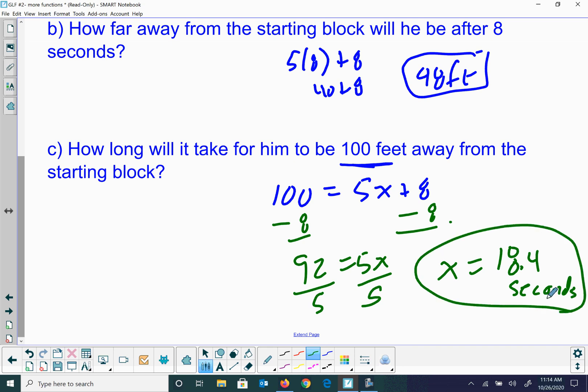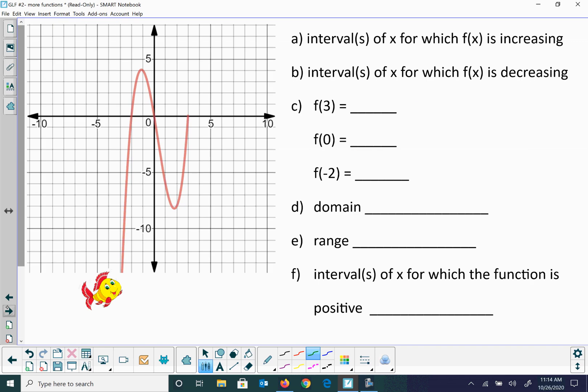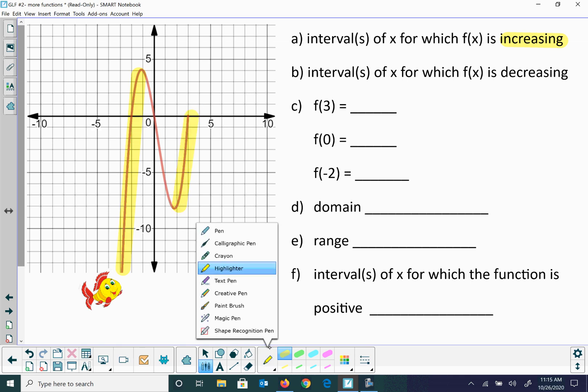This one we're looking at increasing and decreasing. Let's do this in yellow. Increasing means it's gonna go up towards the right, so those are the two regions where we're increasing. Let's take that, and we would be able to say this looks like about three in the x direction.